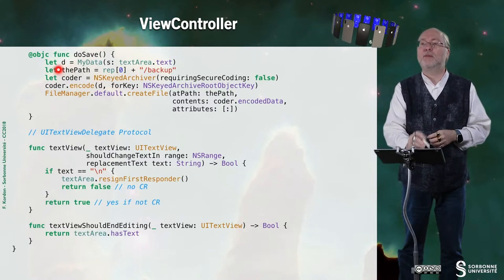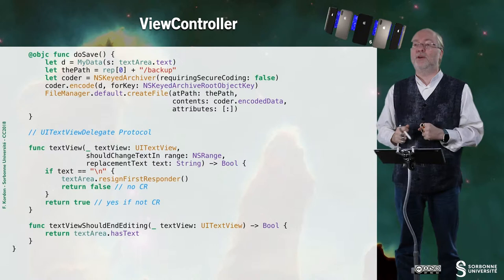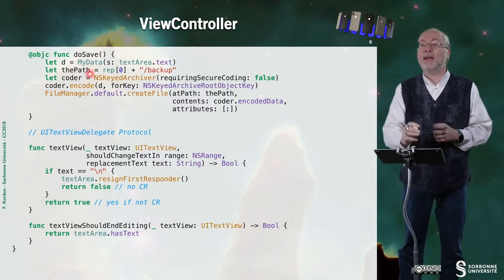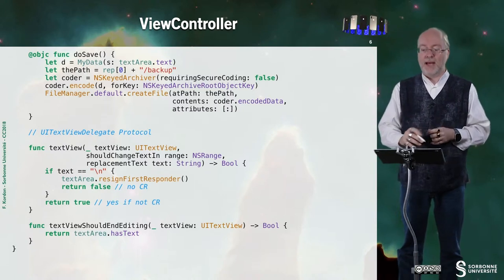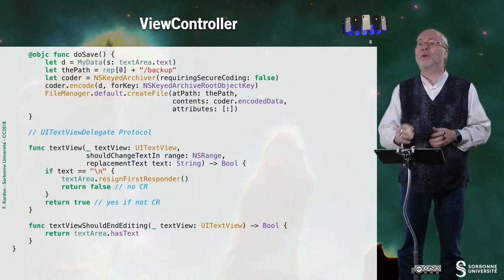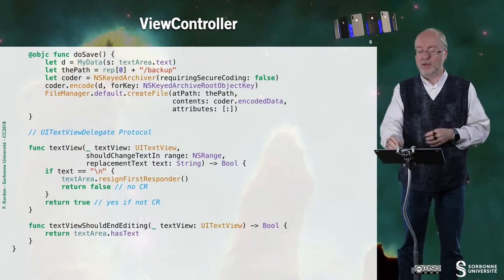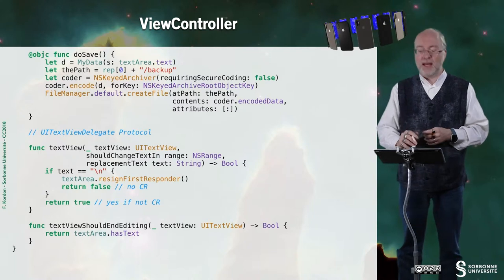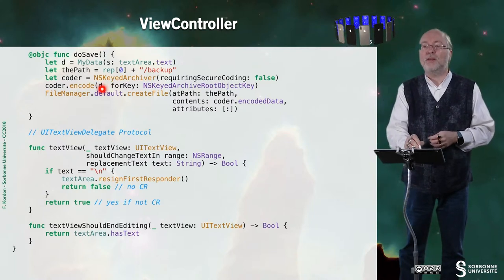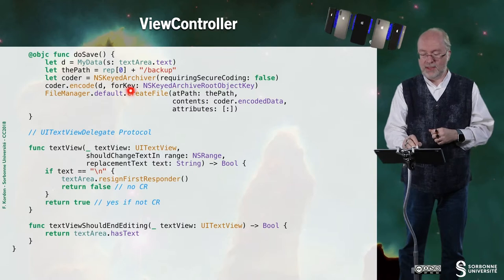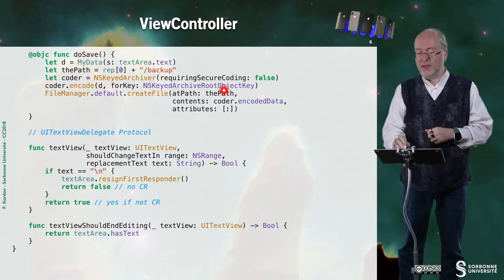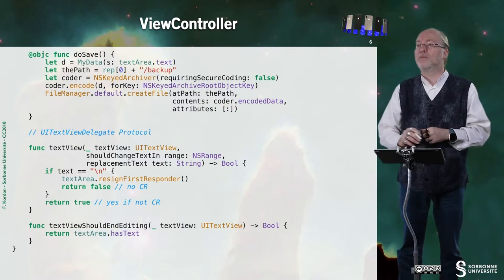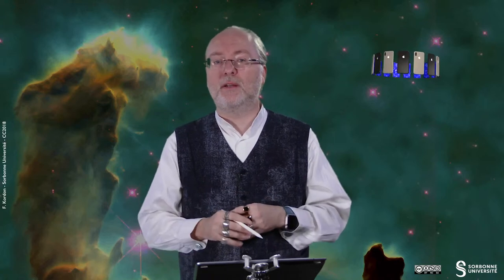Let's now have a look at the doSave method. Here I create myData with the text from the textarea. I create a path for the file where I want to store this information. I create the coder from an NSKeyedArchiver. No secure coding is required. And then I request this coder to encode D as a whole object. Then I create a file with the encoded data I find in the coder, and this is the content that will be stored in the file. That's all — easy.